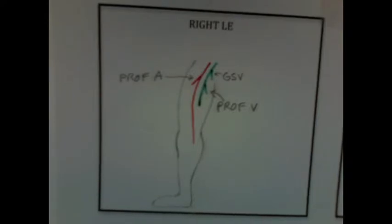Here's a diagram of the right lower extremity with superficial femoral vein, superficial femoral artery. Notice the three bifurcations here: profunda vein, profunda artery, and greater saphenous vein.